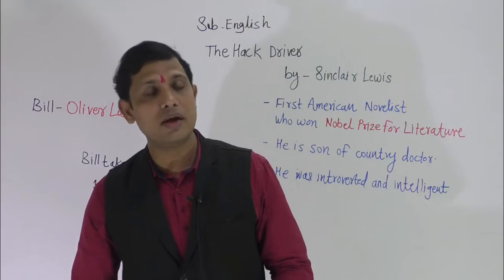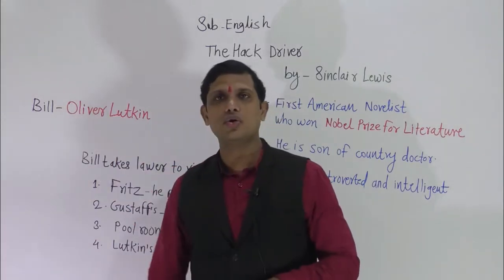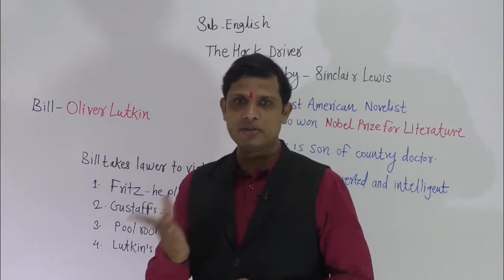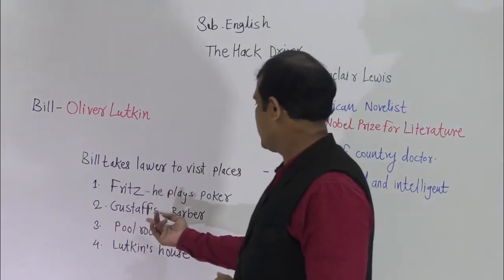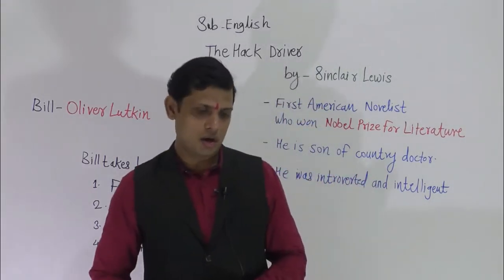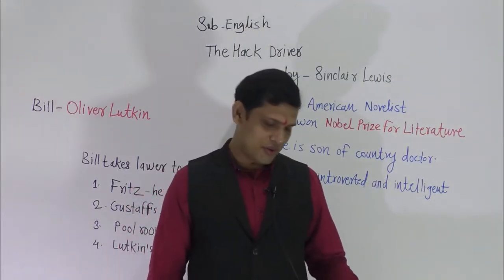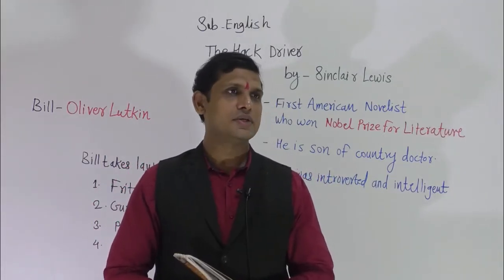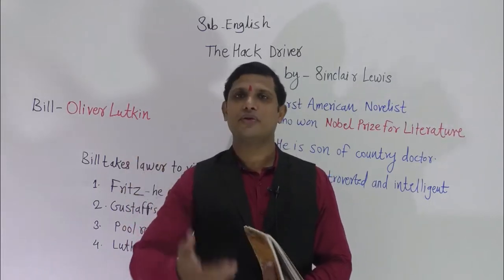While learning this lesson we are going to go with this Bill — a character who, as we will see afterward, is actually Oliver Lutkin. There are four places mentioned: Fritz, where he plays poker; Gustav, a barber shop; a pool room; and Lutkin's house. This lesson has a certain climax, and you will surely enjoy it.